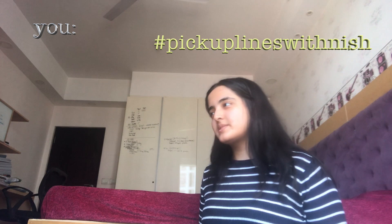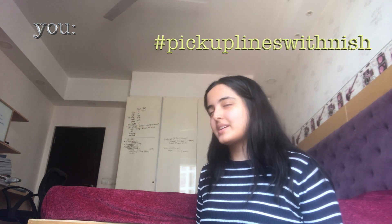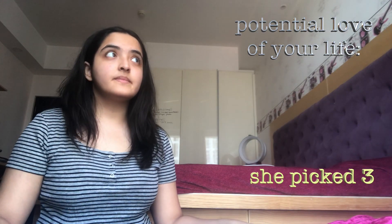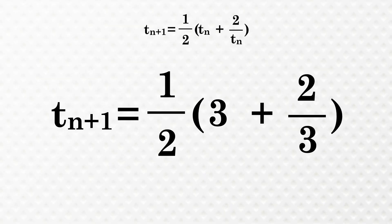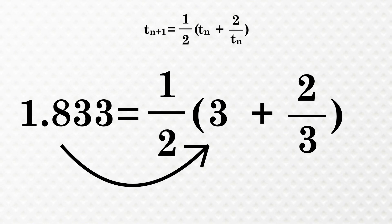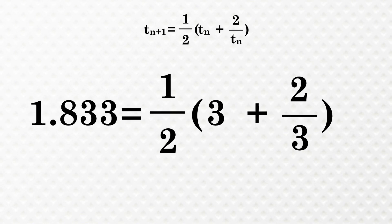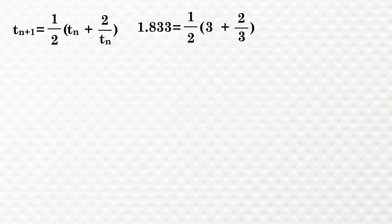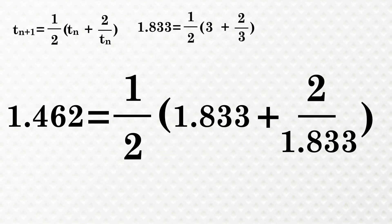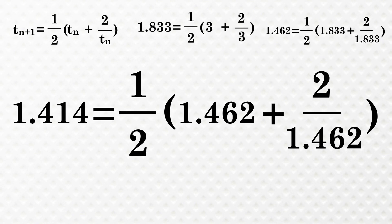Let's start by asking the potential love of your life for a random number. Give me a random number and I'll show you a math trick. How about 3? Plug that number into this equation as a first term and crunch for two or three times. And ta-da, we're approaching the value of root 2.